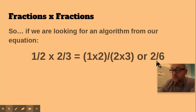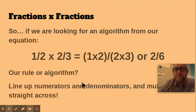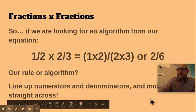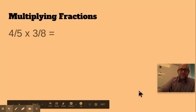And those become our new numerator and denominator. So our rule for the algorithm, line up those numerators and denominators and multiply straight across. Pretty easy. It's going to be the shortest lesson we've had all week.